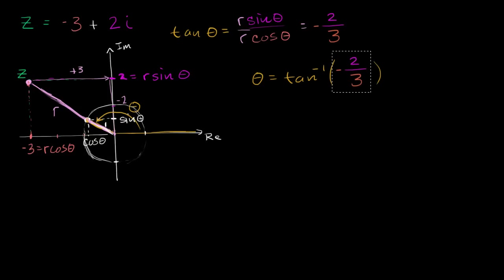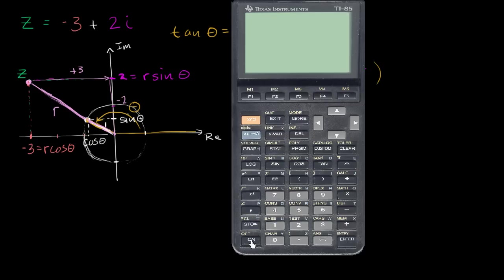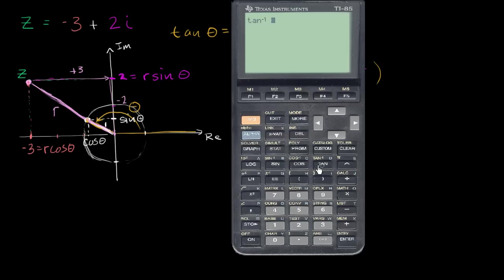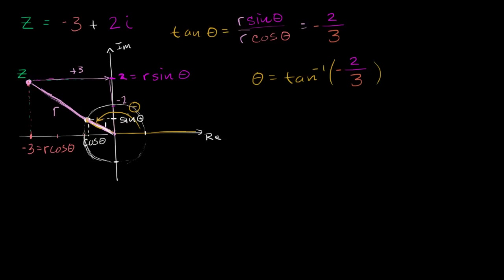Let's get our calculator out. I'll make sure that I am in radian mode — I am. So I take the inverse tangent of negative two divided by three, which gives us approximately negative 0.588. So if we round to the nearest hundredth of a radian, it's approximately negative 0.59.